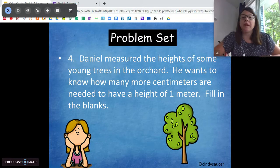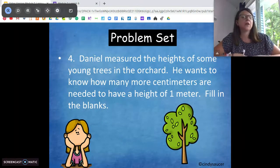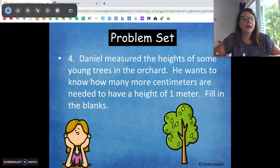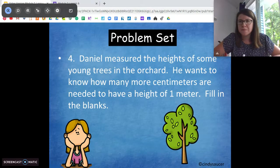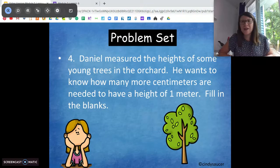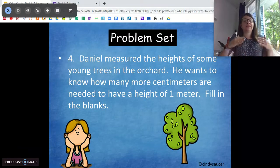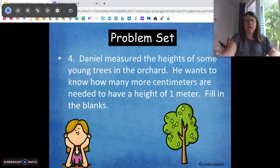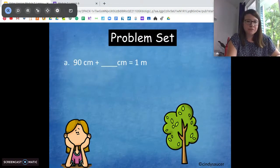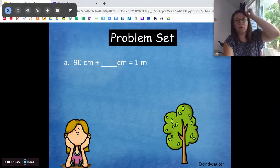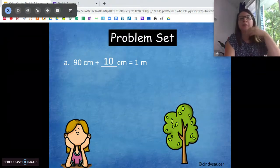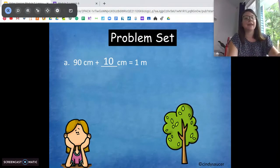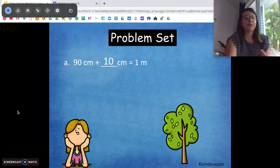Daniel measured the heights of some young trees in an orchard. He wants to know how many more centimeters are needed to have the height of a meter. Do you remember how many centimeters are in a meter? One hundred centimeters in a meter. So we need to get whatever height was there up to a meter, up to a hundred centimeters. All right. So one of them was 90 centimeters. How many more centimeters do we need to get to one meter or 100 centimeters? 10. Good job. 90 plus 10 is 100. Or 90 centimeters plus 10 centimeters is one meter. Excellent work.